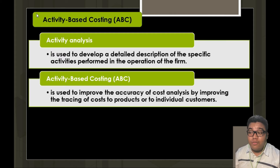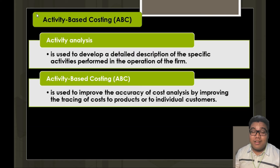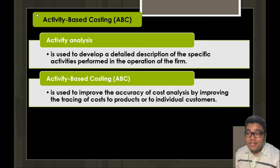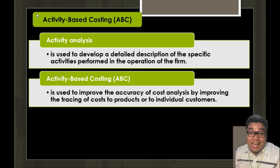Activity-based costing improves the accuracy of cost analysis by improving the tracing of costs to products or individual customers. In this approach, costs are traced per activity rather than broadly allocated. This provides high accountability because each activity has an assigned and traceable cost.